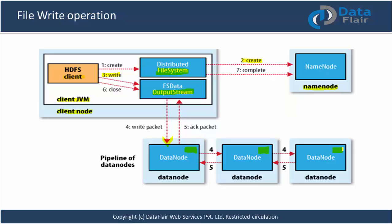The acknowledgement goes in reverse order: the third data node sends acknowledgement to the second, second to the first, and then the final acknowledgement goes to the client. All data nodes are in constant communication with the name node, and the data node sends block information to the name node. While writing one block, another write is happening in parallel on a different set of data nodes - it is not forced to finish block 1 before starting block 2.